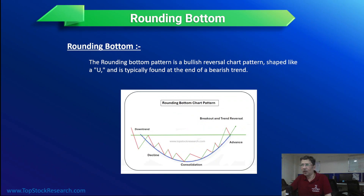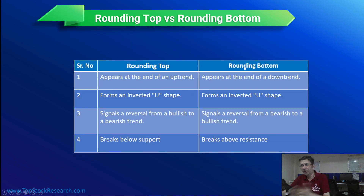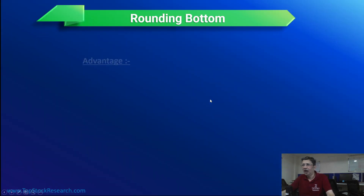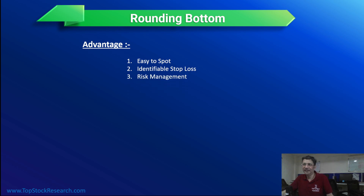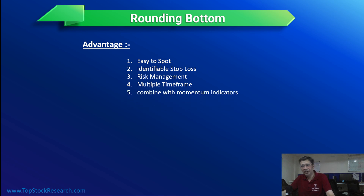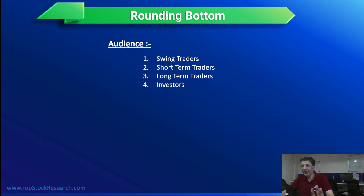That's pretty much what I wanted to cover on rounding bottom and rounding bottom screener. Rounding top and rounding bottom are just opposite — one forms in an uptrend, one in downtrend. U-shape, inverted U-shape; signals from bullish to bearish, bearish to bullish; and support and resistance levels are there. Easy to spot, not very difficult once you understand the concept. Tools like ours help you find these screeners. Stop loss is identifiable, good risk reward ratio, and you can use it on any time frame and combine with other indicators. The audience includes swing traders, short term traders, long term traders, positional traders, and investors — everybody can use this pattern.